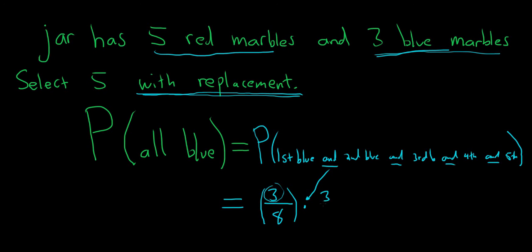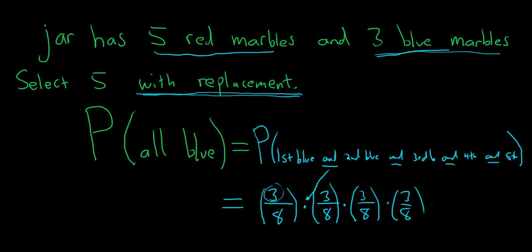We still have three blue marbles and eight marbles total — three ways to pick a blue marble, eight ways to pick a marble — and this repeats for each of the five picks. So we have three-eighths times three-eighths times three-eighths times three-eighths times three-eighths, which is three-eighths to the fifth.